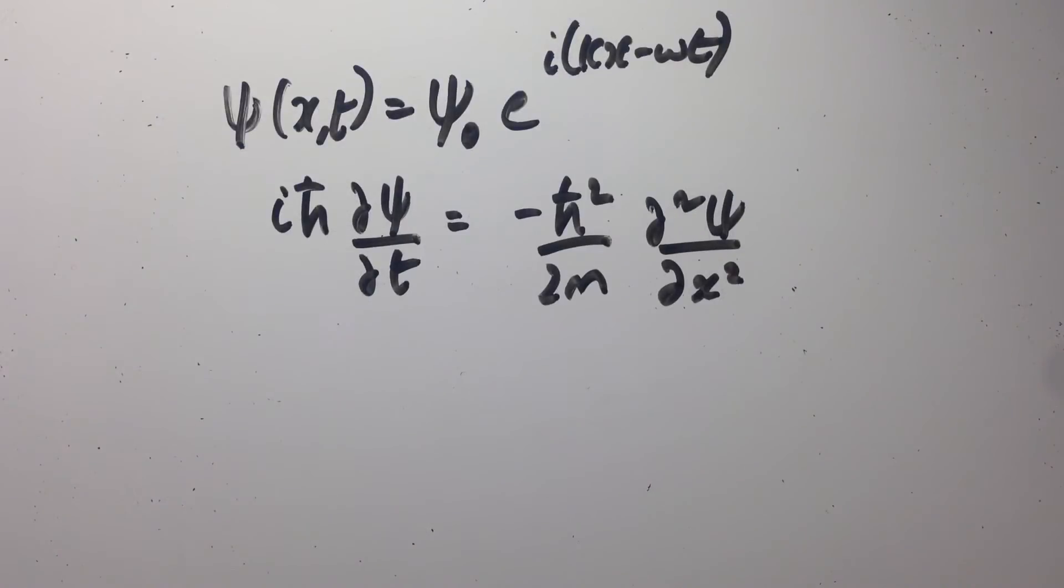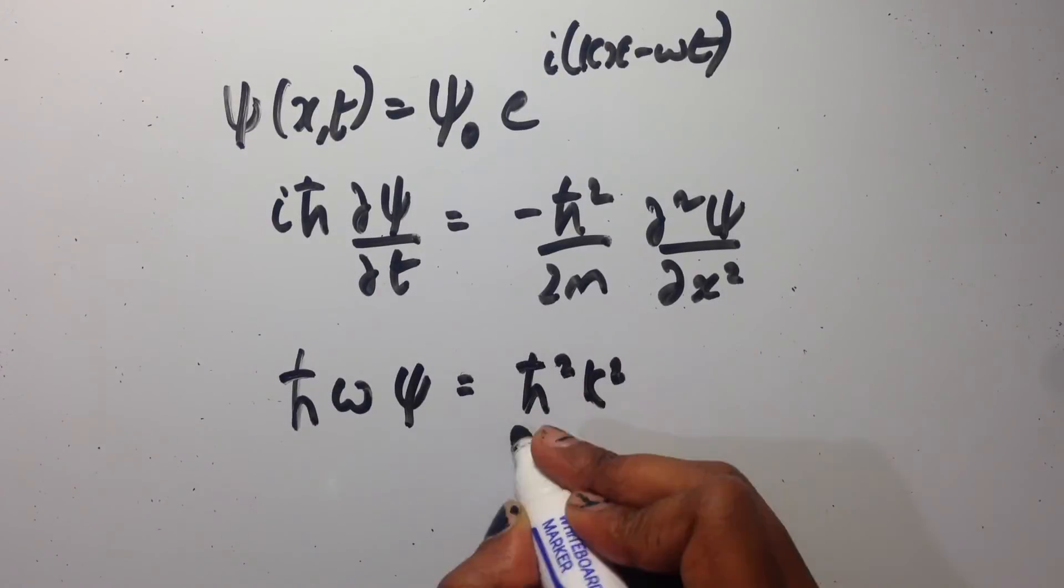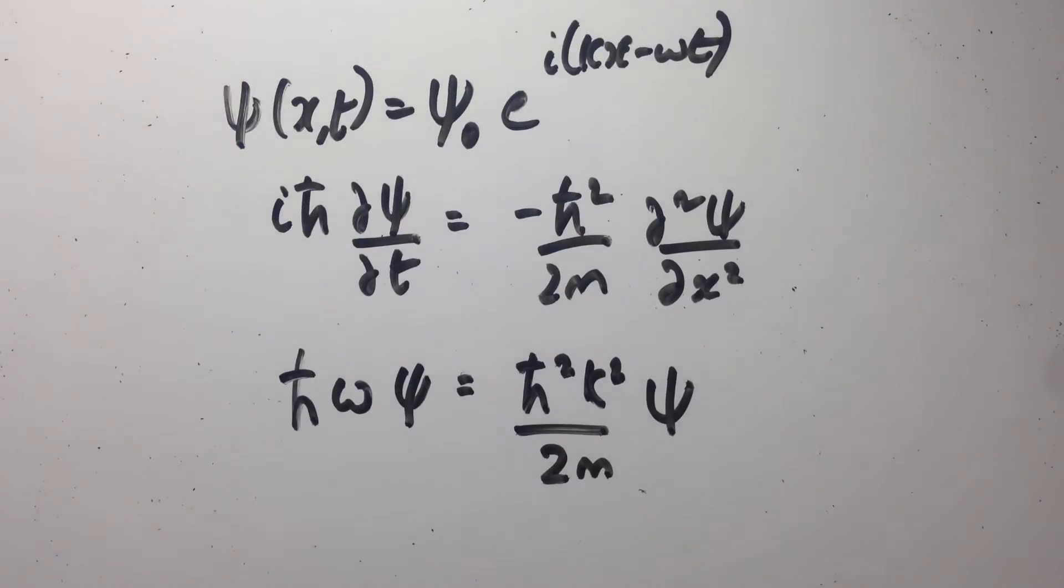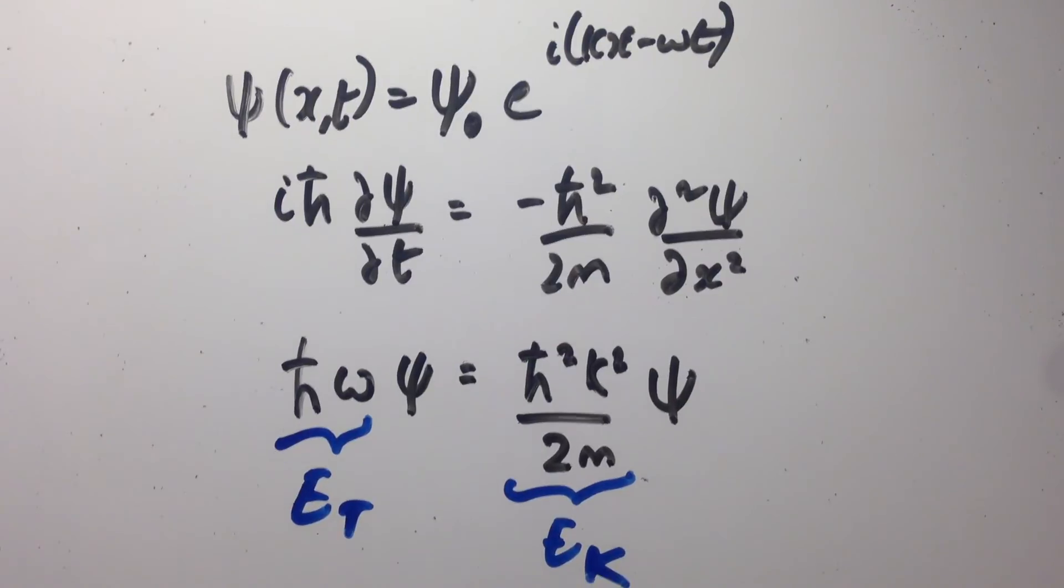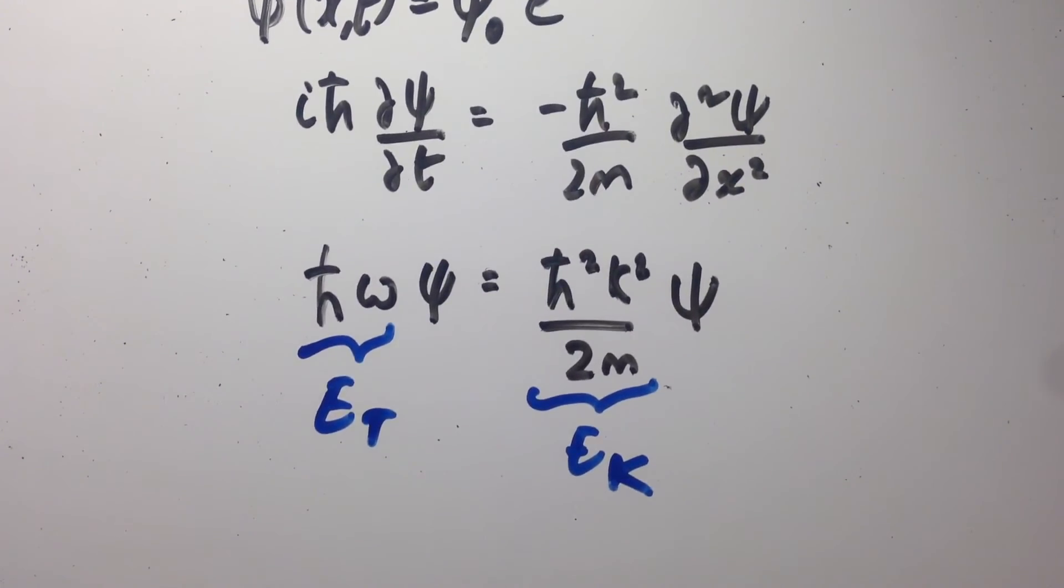Finding d psi by dt and d squared psi by dx squared gives us this equation. h bar omega is the energy equation which we will call E total. And h bar squared k squared over 2m is our kinetic energy equation, which means that this equation applies to a free particle with zero potential.